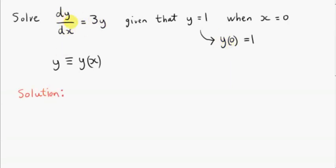What we do is we separate the variables. That's the only type of differential equation we will consider in this course. We should be able to bring all the y's to one side and all the x's to the other side. We could start by multiplying both sides by dx. If we multiply the left-hand side by dx, we'll get dy. If we multiply the right-hand side by dx, we get 3y dx.